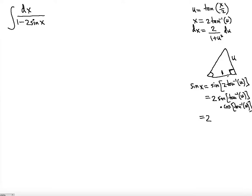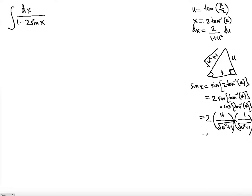Using the Pythagorean theorem, the hypotenuse is the square root of (u squared plus 1). So sine of this angle is opposite over hypotenuse: u over sqrt(u² + 1), and cosine is adjacent over hypotenuse: 1 over sqrt(u² + 1). Multiplying these together and applying the factor of 2 gives sine x equals 2u divided by (1 plus u squared).